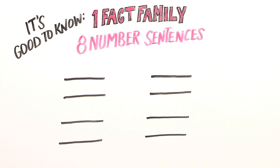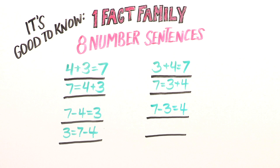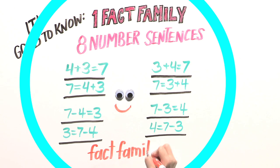One fact family organized in a number bond can make 8 number sentences. Let's look at this fact family all together. Notice that the answer can be at the beginning or end of a number sentence. With practice, your child will see the relationship between all the number sentences of a fact family.